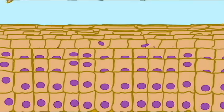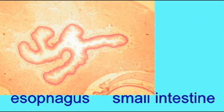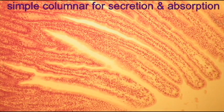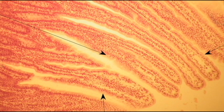In other areas of the GI tract, such as the small intestine, this epithelia is simple columnar epithelia for secretion and absorption.